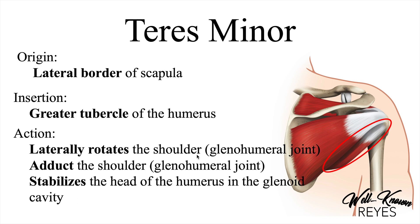The teres minor laterally rotates, adducts, and stabilizes the head of the humerus in the glenoid cavity — that is because the infraspinatus and the teres minor are both synergists. They assist in lateral rotation, adduction, and stabilizing the head of the humerus in the glenoid cavity. Make sure you know that.